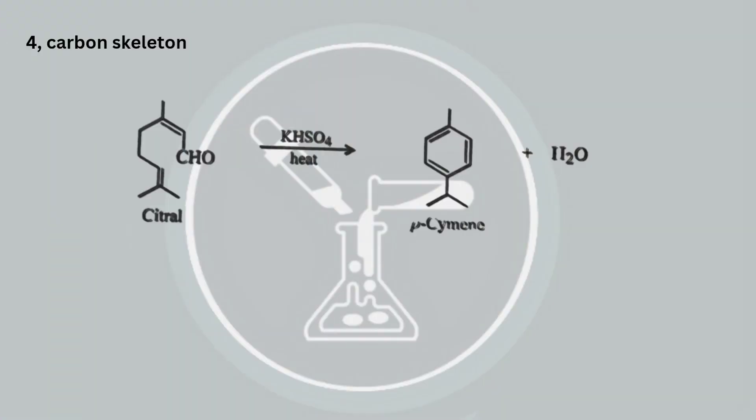When heated with potassium hydrogen sulfide, citral forms p-cymene by cyclodehydration. This indicates that citral is acyclic with two isoprene units joined head to tail.